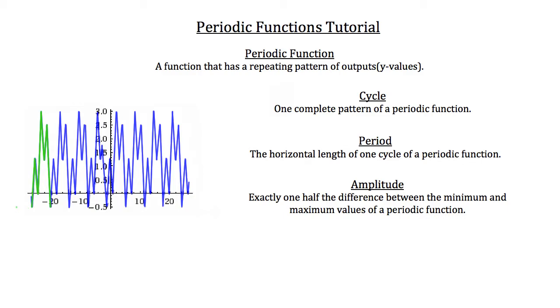Let's say that right here is the minimum value, and up top here is the maximum value. The amplitude is one half the difference between the minimum and the maximum values. So I'm going to take the maximum value, which was 3.0,